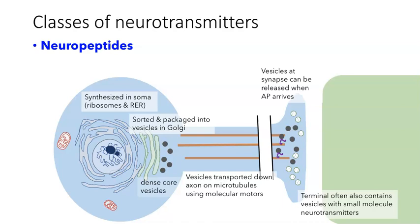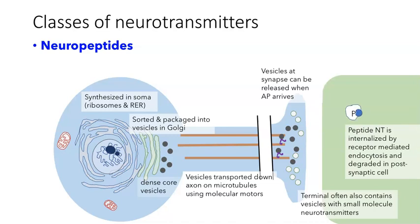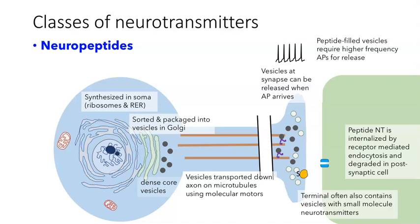There are a couple of important differences in how peptide and small molecule transmitters act. When peptide hormones are released, they bind to their receptor and that peptide-receptor complex is taken into the cell where it will be degraded. In contrast, when a small molecule is released, it can be reabsorbed by a reuptake transporter and repackaged at the site. Another difference is that peptide-filled vesicles require high-frequency action potential trains for release, whereas even one or two action potentials arriving at the terminal will allow small clear vesicles filled with classic neurotransmitters to be released.